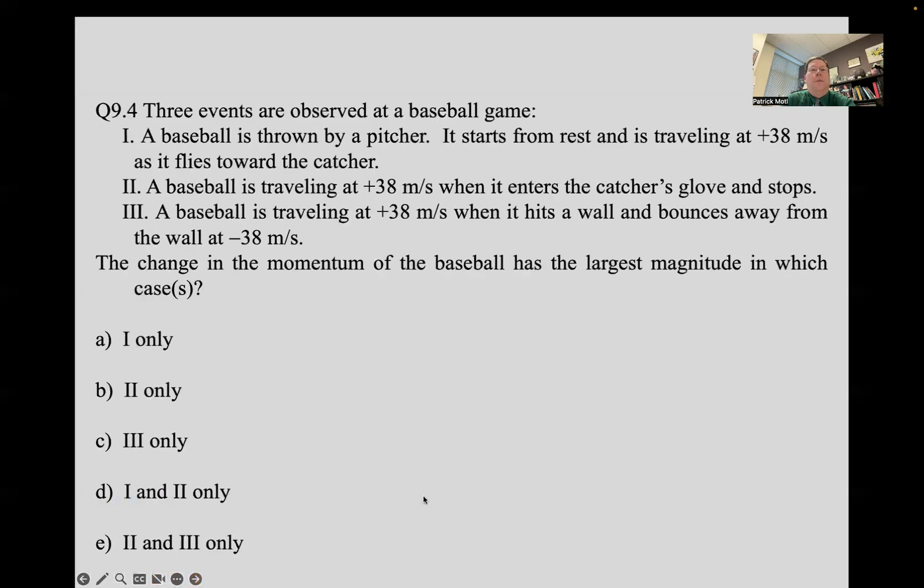Okay. Let's try another one. Three events are observed at a baseball game. Baseball is thrown by a pitcher, starts from rest and is traveling at 38 meters per second as it flies towards the catcher. So going from zero to plus 38 meters per second. Baseball is traveling at 38 meters per second when it enters the catcher's glove and stops. So it goes from plus 38 meters per second to zero. Case three, baseball is traveling at plus 38 meters per second. It hits a wall and bounces away from the wall at minus 38 meters per second. The change in the momentum of the baseball has the largest magnitude in which of those cases. So think it through, talk it over, and see what conclusion you can draw.